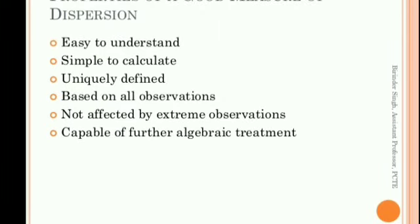Now, what are the properties of the good Measures of Dispersion? First one is easy to understand — simple hai. Deviation find karo, deviation ki jo value hai divided by number of observations — toh simple to find also, and easy to understand also, and simple to calculate also. Third point: uniquely defined — clearly defined hai — what we want to do or what we want to be covered is clearly defined, ke aapko yahan pe variation find karna hai.